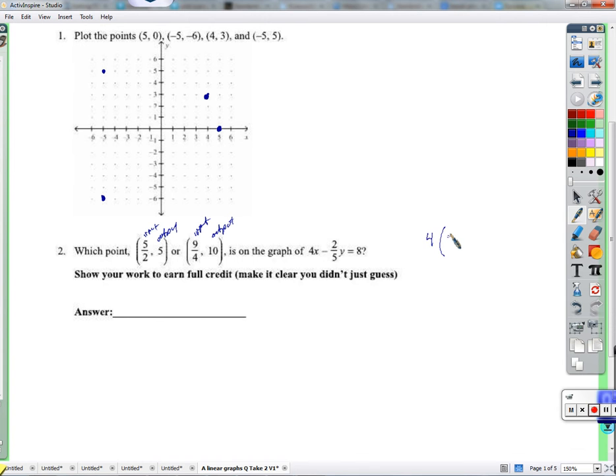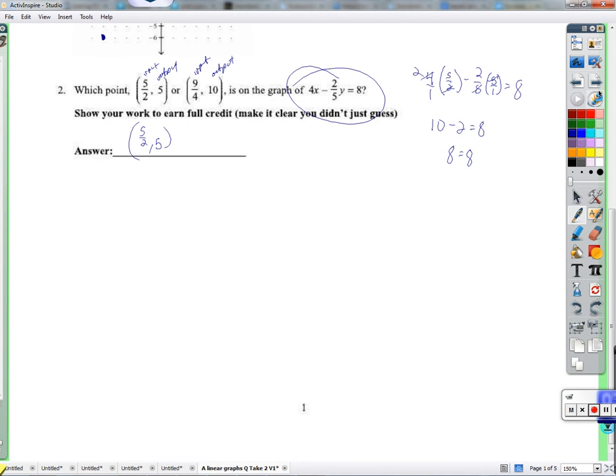So 4 times 5 halves minus 2 fifths times 5. Put that over 1. I'll put this 4 over 1, makes it easier. Does that come out to be 8? Let's see. Well, 2 cancels 4, that's 2. That's 2 times 5 is 10. 5 cancels 5. That's minus 2. And that does equal 8. So 5 halves comma 5 must be a point on this graph. If I were to graph it, I would find a point right at 5 halves comma 5. If I put a 9 fourths 10, 9 fourths here and 10 there, I won't get 8. That's what will happen. Alright, that's it for that page.